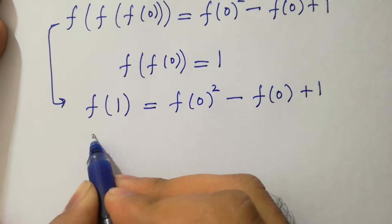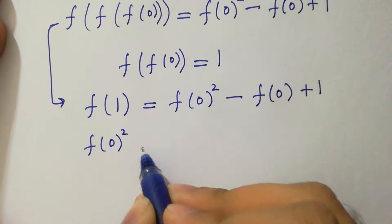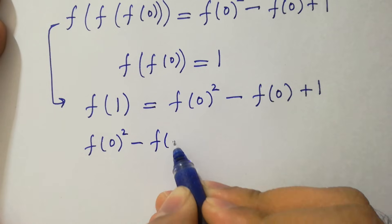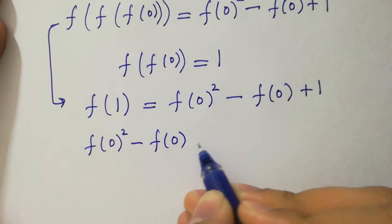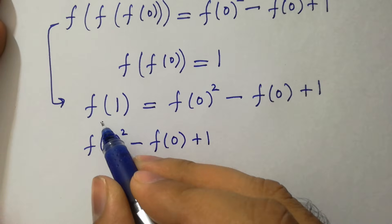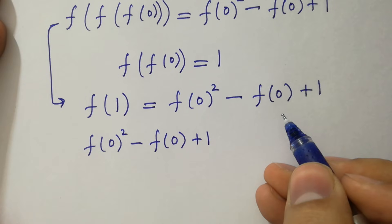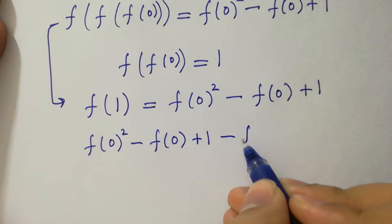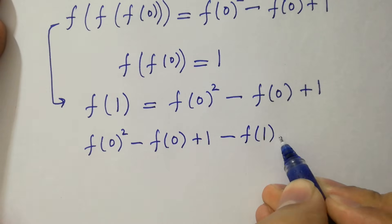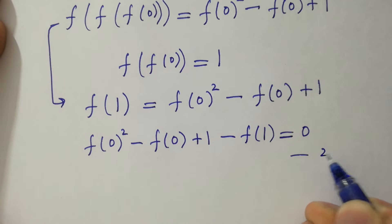So f of 0 squared minus f of 0 plus 1 minus f of 1 equals 0. Say this is the second equation.